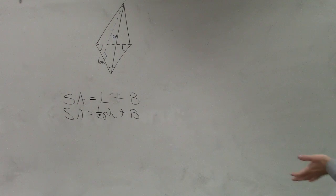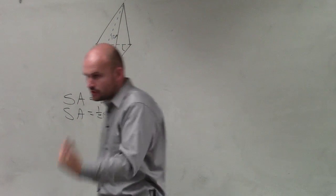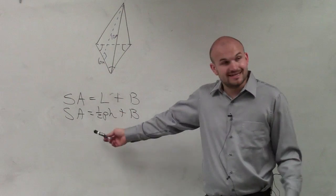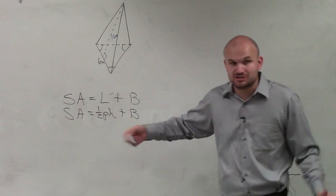What I see again, what they're asking us to do is determine the lateral surface area. Now remember, the lateral surface area, L, is equal to 1 half perimeter times h.